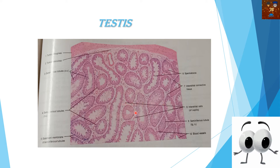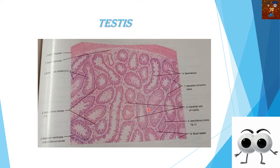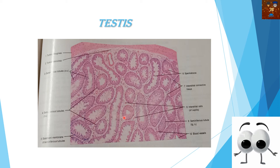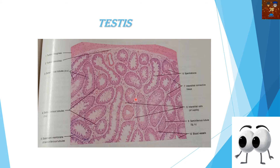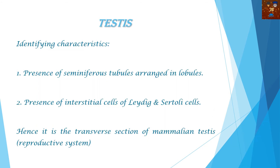Within the seminiferous tubules you can also identify the Leydig cells — see, Leydig cells. These are the Leydig cells, which are another identifying characteristic feature of the mammalian testis. The identifying characters are: presence of seminiferous tubules arranged in lobules, and presence of interstitial cells of Leydig and Sertoli cells. So this is the transverse section of the mammalian testis, which comes under the male reproductive system.